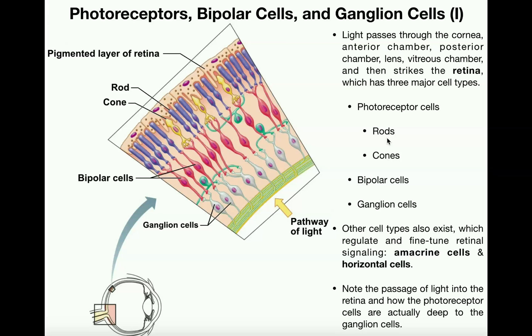Within the retina, we have three cell types. The first type is called the photoreceptor cells, or just photoreceptors, and these are the cells that initially detect the light. There are two subtypes of photoreceptor cells, and those are rods and cones.